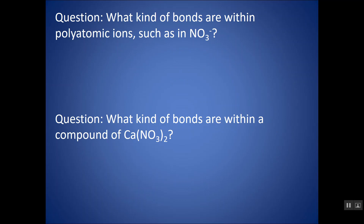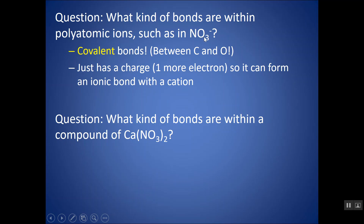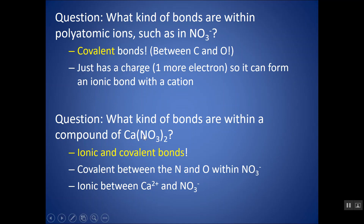Which kinds of bonds are within polyatomic ions such as nitrate? Within nitrate, the N is covalently bonded to the O — they are two different non-metals with different electronegativities, so these are covalent bonds between N and O. The nitrate ion has a charge because there's one more electron shared within the molecule, which allows it to also ionically bond. So if you have an ionic compound that contains a polyatomic ion, there will be two types of bonds: covalent bonds between the N and O in nitrate, and ionic bonds between the calcium 2+ and the nitrate ions. If you see a polyatomic ion within an ionic compound, that compound contains both ionic and covalent bonds.